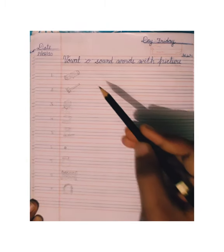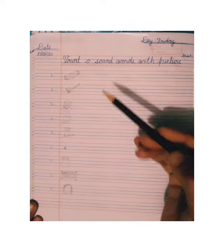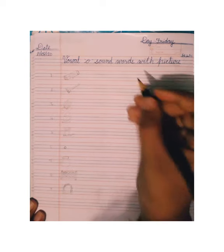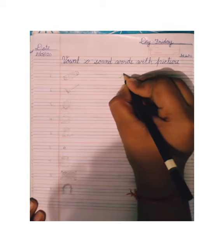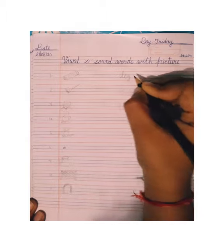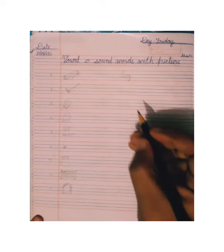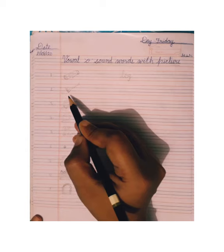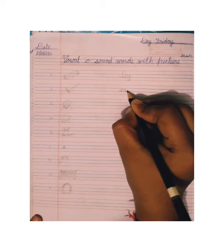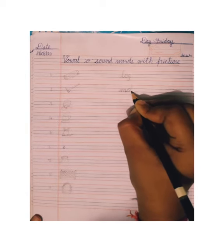Also you can see I have already drawn some pictures on this page. So firstly you will identify the picture, then you will write their name, and these pictures are related to vowel O sounds words. So what is this? This is log. So we will write here log — L O G.